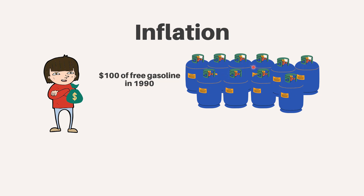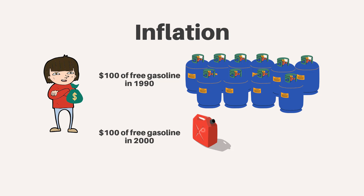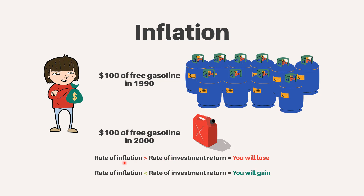For example, if you were given a certificate for $100 of free gasoline in 1990, you could have bought a lot more gallons of gas than you could have if you were given $100 of free gas a decade later. Inflation and purchasing power must be factored in when you invest money, because to calculate your real return on an investment you must subtract the rate of inflation from whatever percentage return you earn on your money. If the rate of inflation is actually higher than the rate of your investment return, then even though your investment shows a nominal positive return, you are actually losing money in terms of purchasing power. For example, if you earn 10% on investments but the rate of inflation is 15%, you're actually losing 5% in purchasing power each year.